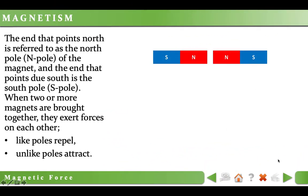The end of a magnet that points north is referred to as the north pole, or N-pole. And the end that points due south is the south pole, or S-pole of the magnet.